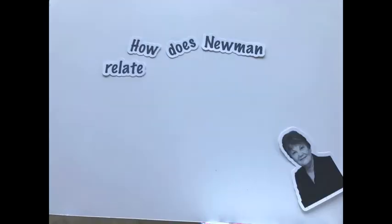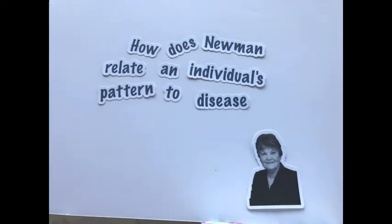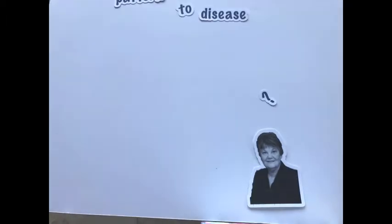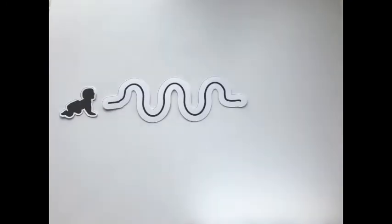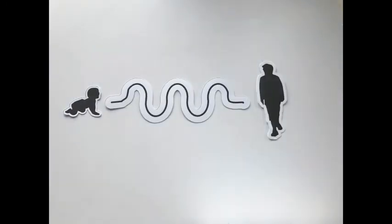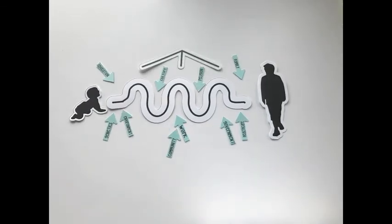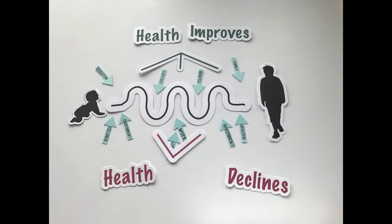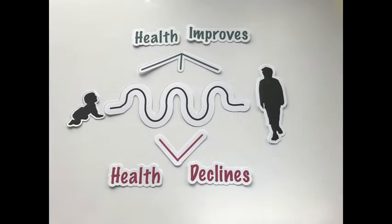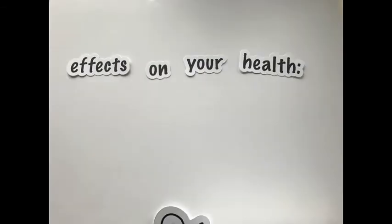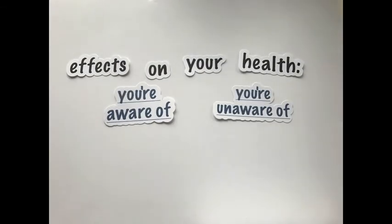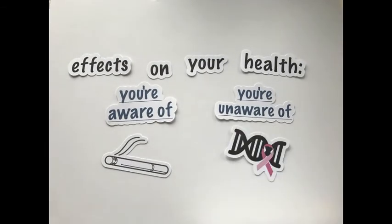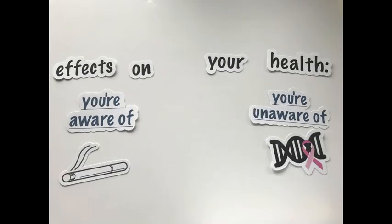How does Newman relate an individual's pattern to disease? Throughout the lifespan, diseases manifest themselves through the individual's evolving patterns from person to environment interactions. The person could be aware of negative effects, such as smoking, or unaware of negative effects, such as the presence of cancer genes.